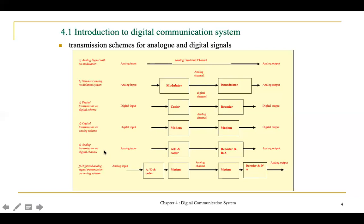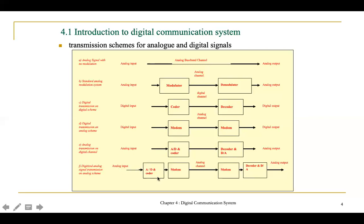The fifth scheme is analog transmission on a digital channel — analog input and analog output, but transmitted through a digital channel. This requires an analog-to-digital coder and a digital-to-analog decoder. The sixth scheme is a digitized analog signal transmitted on an analog channel — the analog input is converted to digital, then back to analog. These are the several types of transmission schemes for analog and digital signals.